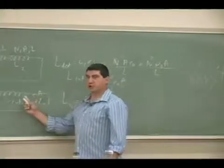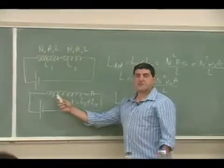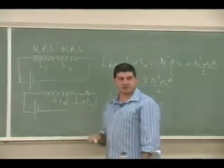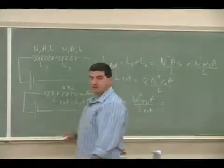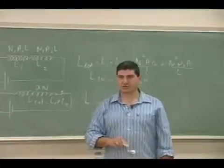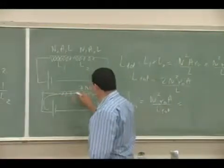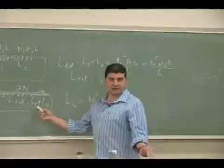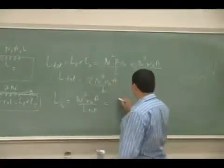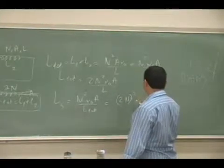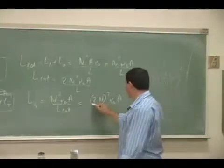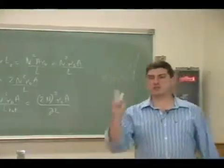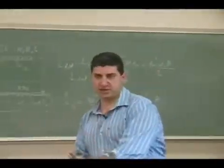The n is the total number of turns of the new combined solenoid, which is double: 2n turns. The magnetic field goes through all of those turns, and the total length is twice the length of each one. So putting that into the equation: (2n)² for the turns squared, the area A stays the same, and the total length is 2L.